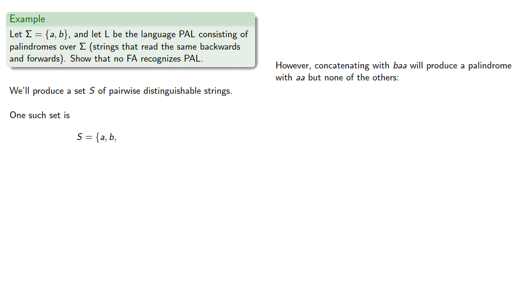However, concatenating with BAA will produce a palindrome with AA, but none of the others. And we already have a string that distinguishes A from B, so we don't need to worry about that. So AA is an element of S.